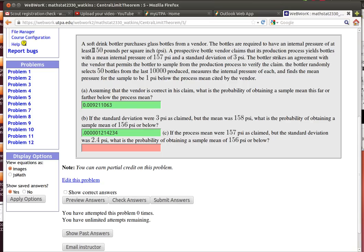It needs to be able to handle at least 150 pounds per square inch, otherwise the bottle could break. A proposed bottle vendor claims that they're producing bottles that have a mean pressure of 157 PSI and a standard deviation of 3 PSI.